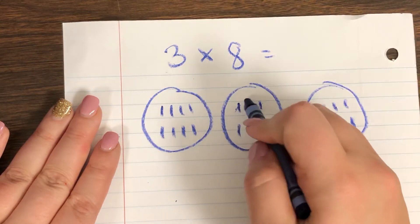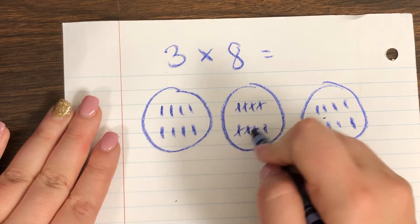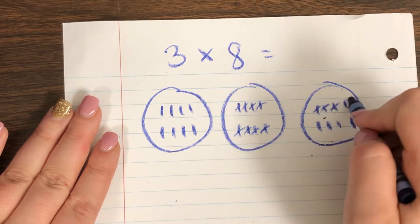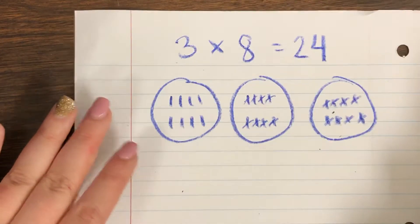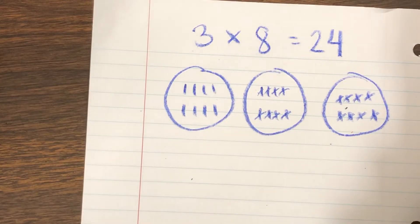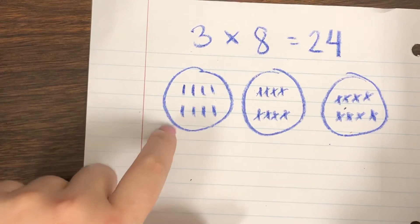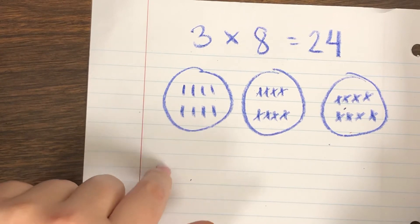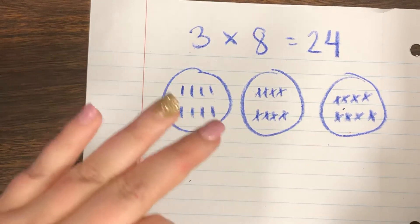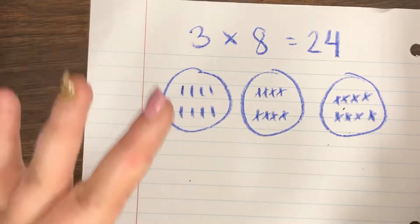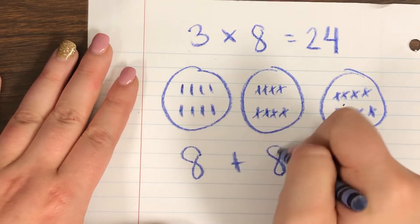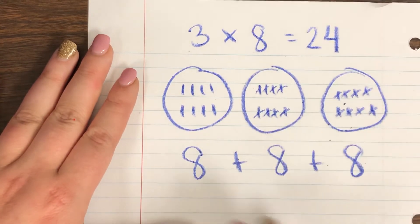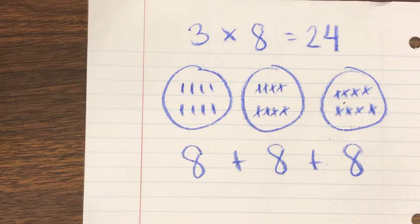Counting up all the marks: eight, nine, ten... all the way to twenty-four. So we figured out our product is 24, but we need to figure out the repeated addition still. Luckily, all you have to do for repeated addition is add your groups together — it's super easy if you draw your groups. We've got eight here, plus eight here, plus eight here. There's your repeated addition — very quick and easy to find.